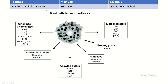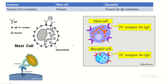The marker of cellular activity in mast cells is the tryptase test, but for basophils it has not yet been established. Surface Fc receptors are present on both mast cells and basophils for immunoglobulin E antibodies. This Fc receptor attaches to the antibody which then attacks the pathogen, and after attachment the degranulation of the mast cell occurs.